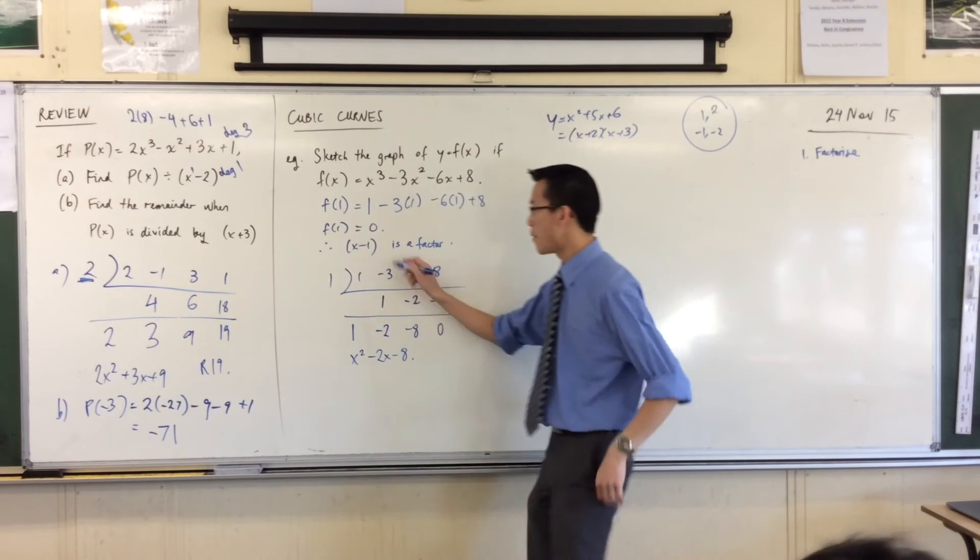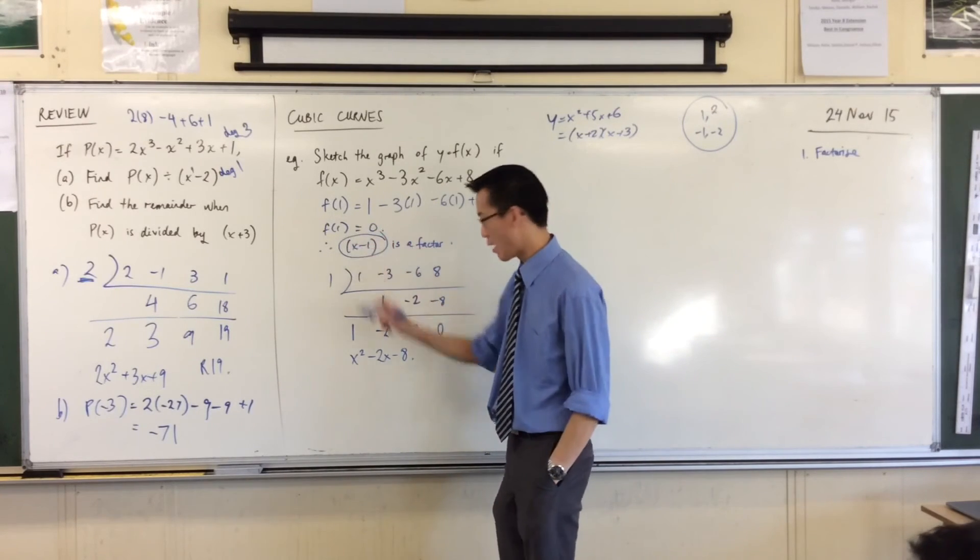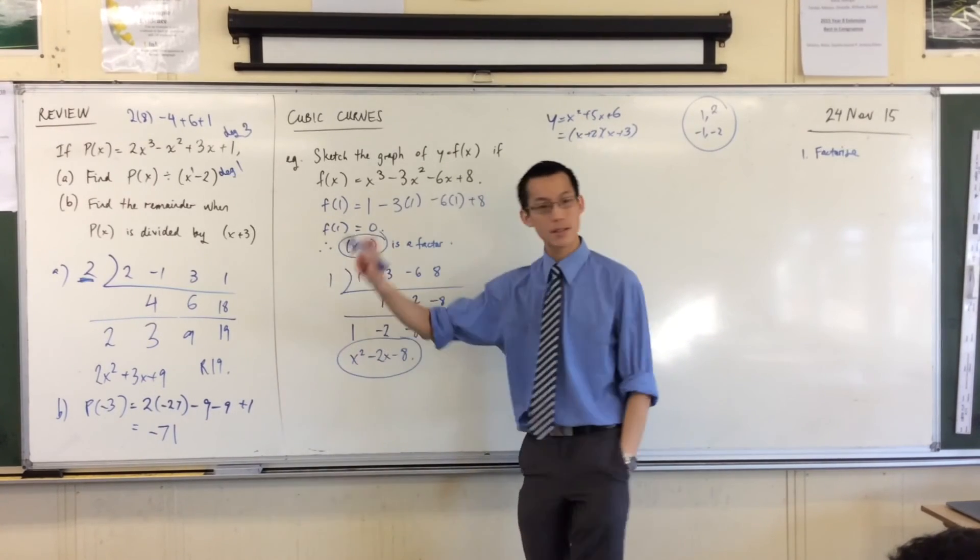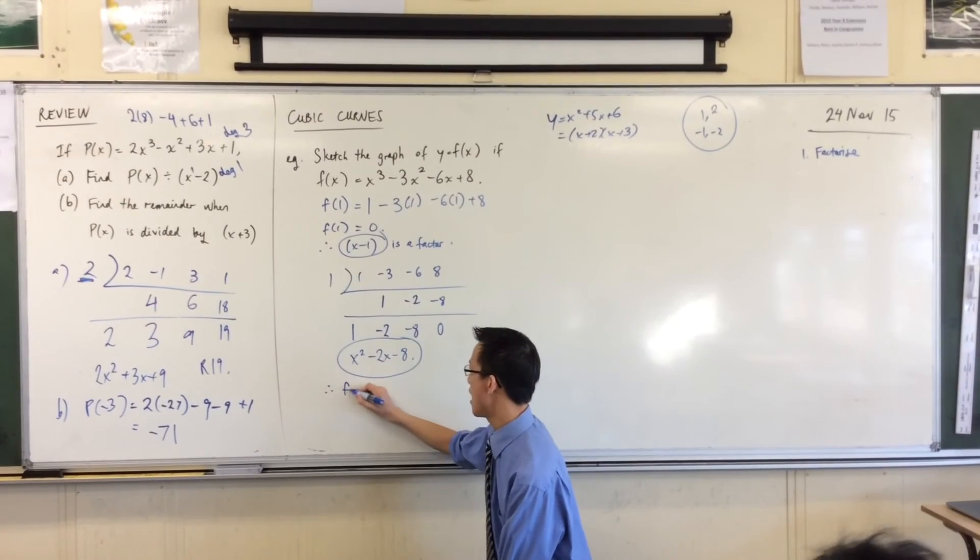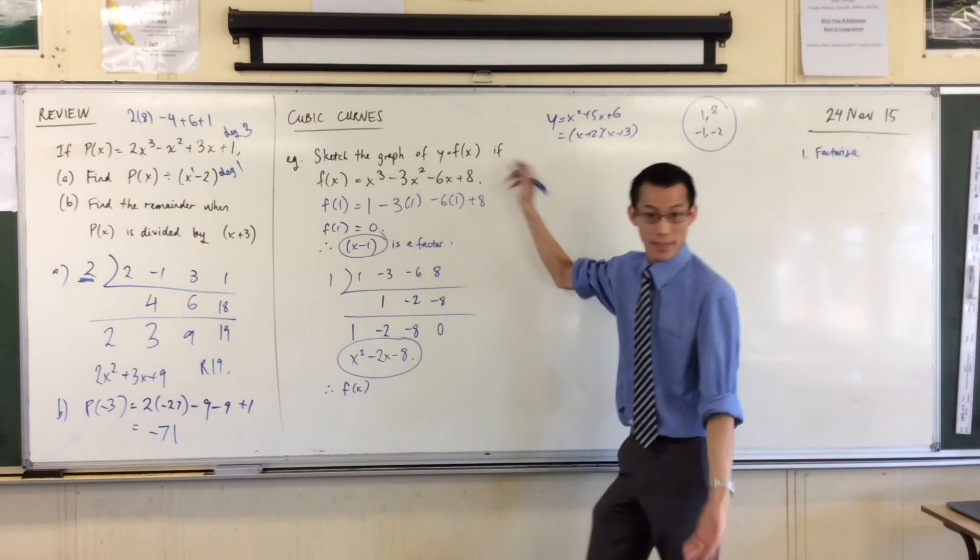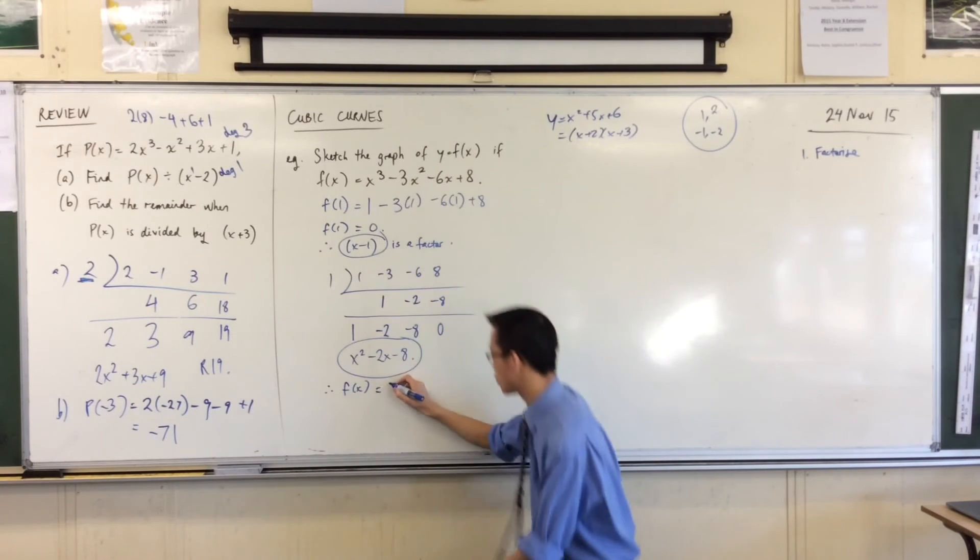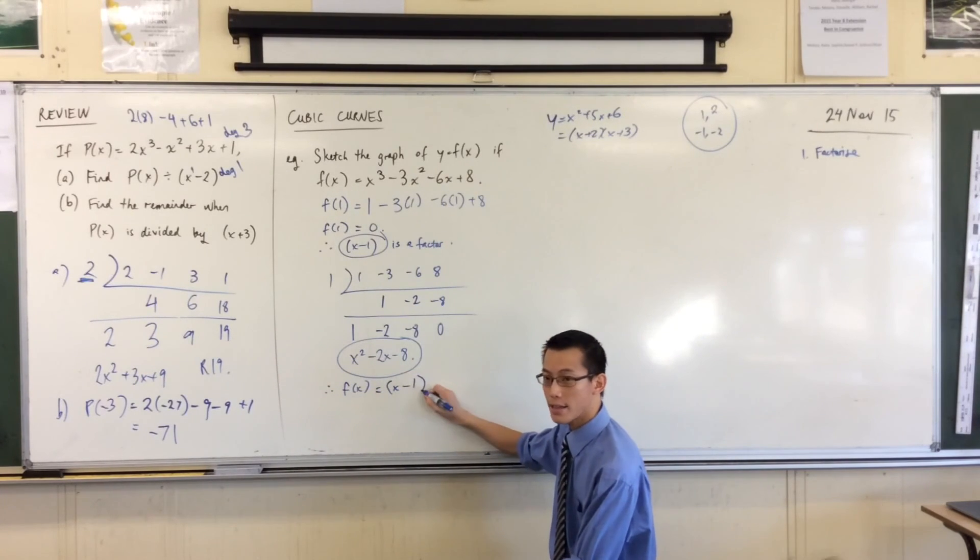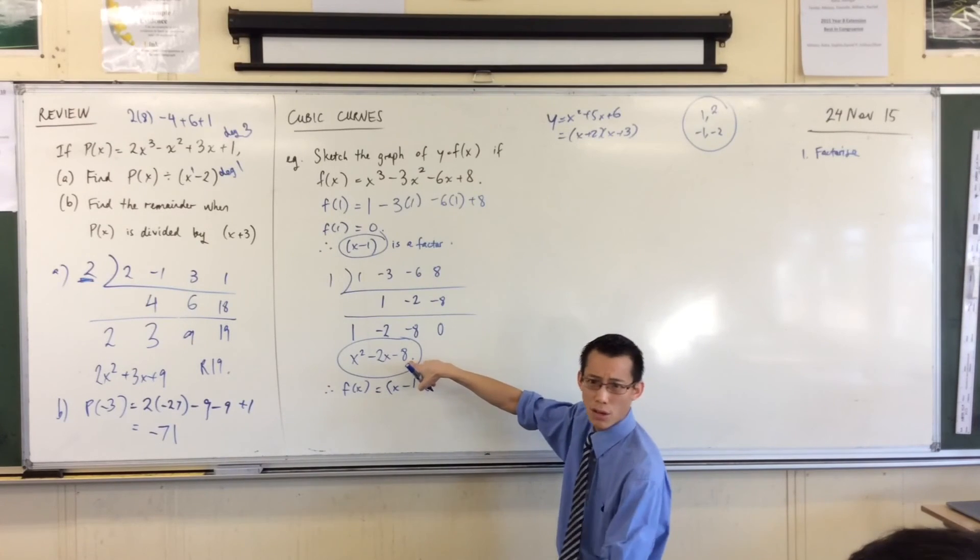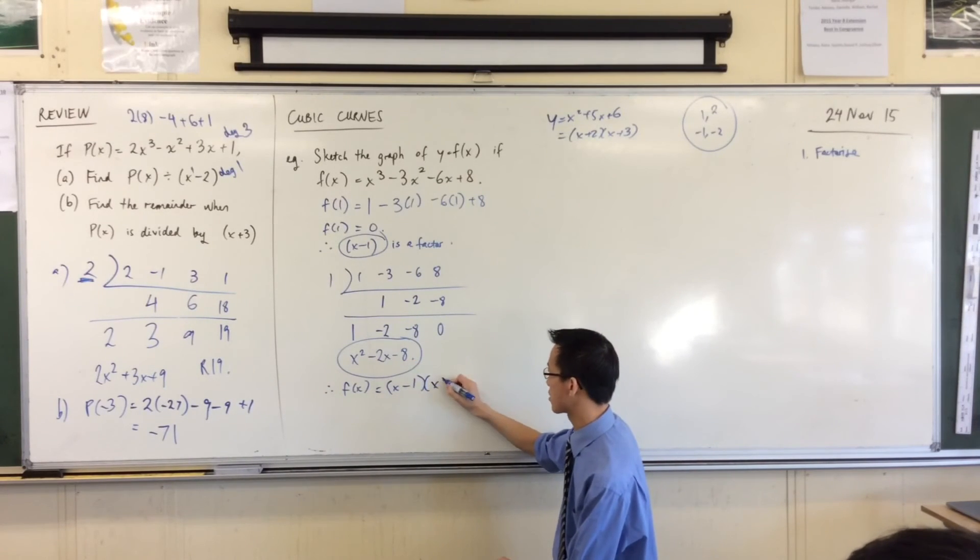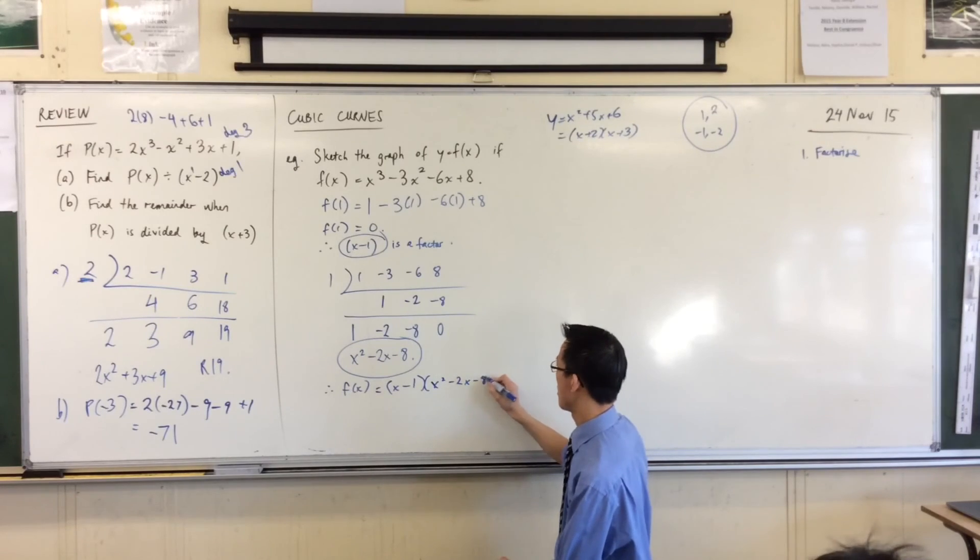So, having just divided through, remember, I divided by x minus 1, and what I ended up with was this. So, therefore, I can say, therefore, f of x, that thing I started with, that function, is equal to the divisor times the, what's it called again, that thing you end up with? Starts with the q? The quotient. The quotient. Very good. So, x squared minus 2x minus 8.